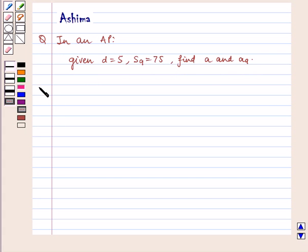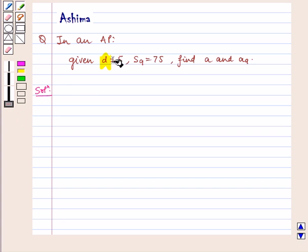Now let's proceed on to the solution. Given to us is D as 5 and S9 as 75 and we have to find A and A9.